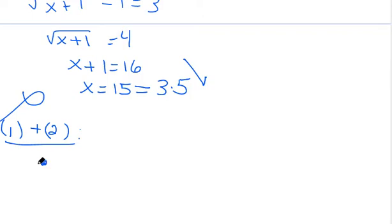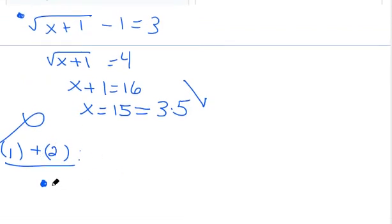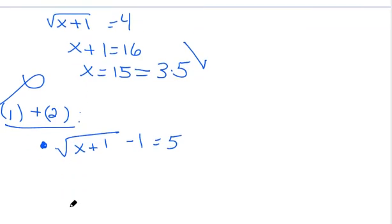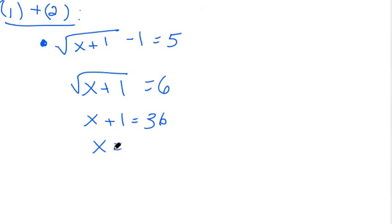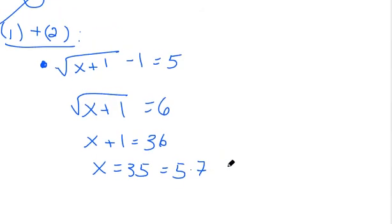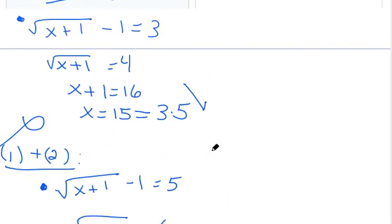Let's continue with the next case from statement 2. What if the square root of (x+1) minus 1 equals 5? Solving for x: the square root of (x+1) equals 6, so x+1 equals 36, meaning x equals 35. Now 35 is 5 times 7, so this satisfies all conditions: it's between 0 and 67, it satisfies statement 2 since 5 is prime, and it satisfies statement 1 since it's divisible by two prime numbers greater than 2. So now we have two different cases that work even combining both statements.